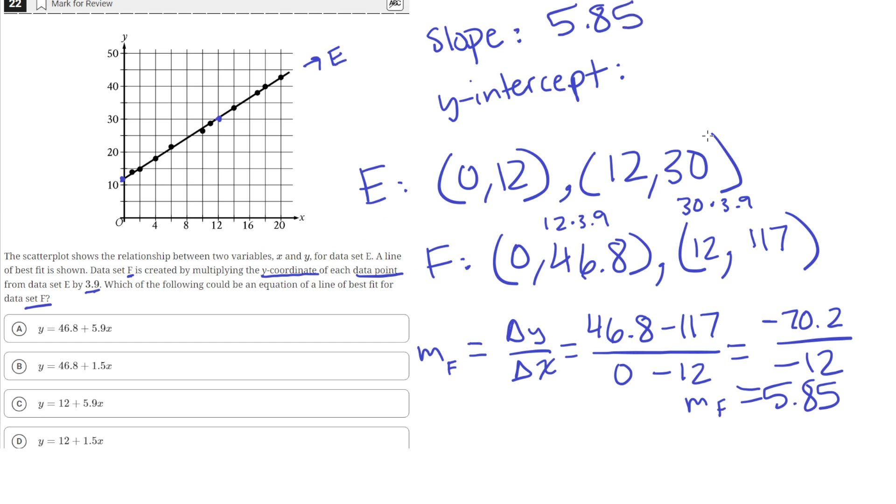And the Y intercept is easy to tell because our first point we chose was the Y intercept of line E. So, that means the Y intercept for line F is just going to be the Y intercept of line E, but with the Y value multiplied by 3.9. The Y intercept of a line is always the value of Y when X is 0. So, in this case, when X is 0, Y is 46.8.